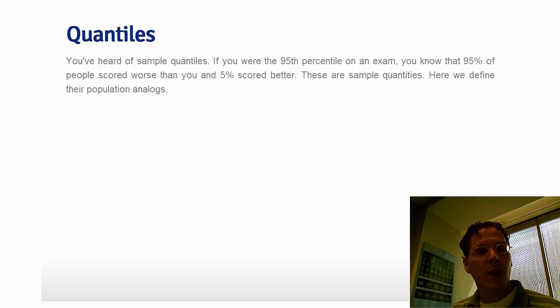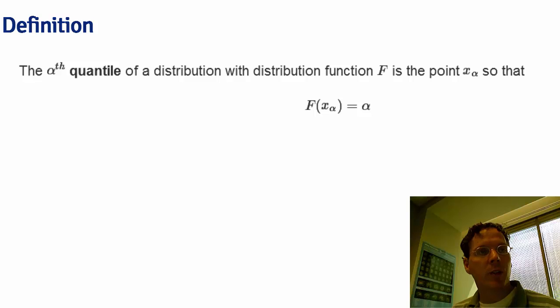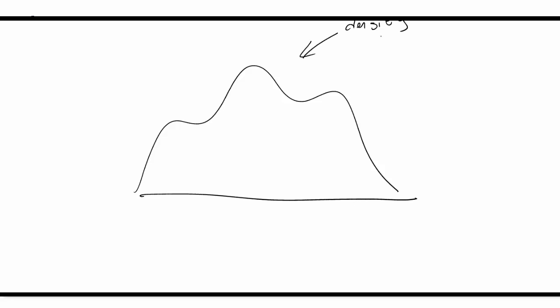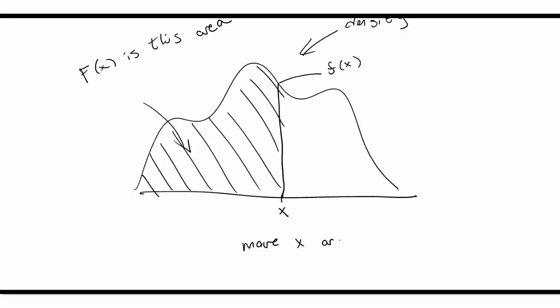To find the 95th percentile from a sample, you line up the observations from least to greatest and find the score such that 95% lie below it. The alpha-th quantile of a distribution function F is the point x-sub-alpha such that F(x-sub-alpha) equals alpha. If we draw the density f(x), the distribution function evaluated at x is the area below x — the probability a random variable from this population is less than or equal to x. The alpha-th quantile is found by moving this line until exactly alpha probability lies below it.